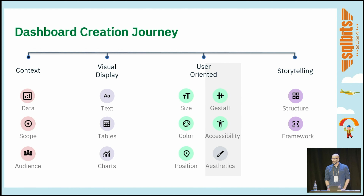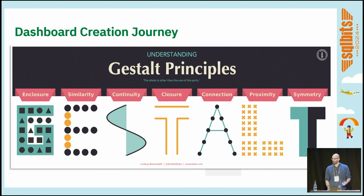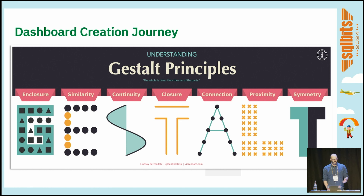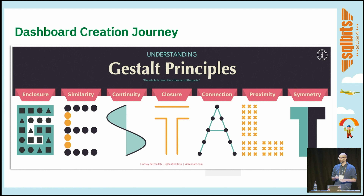You've probably heard of gestalt principles during the last sessions. They have psychology theory behind them — cognitive behavior is basically how our brains are rooted to perceive visual cues. There are mainly seven: enclosure, similarity, continuity, closure, connection, proximity, and symmetry. We can use them to group elements and graphs, and avoid adding unnecessary elements that create noise.